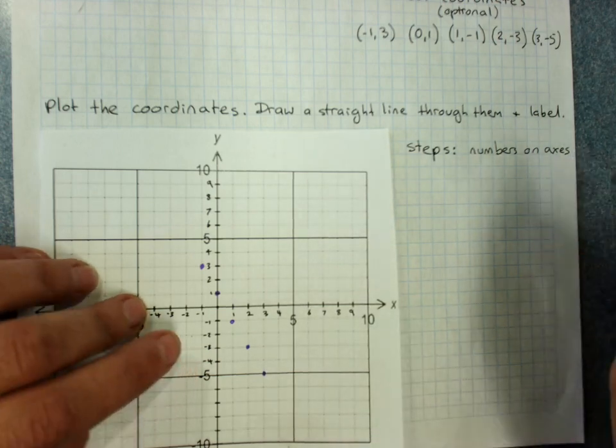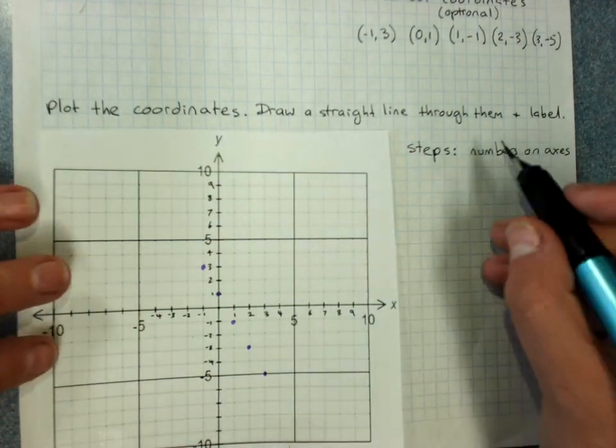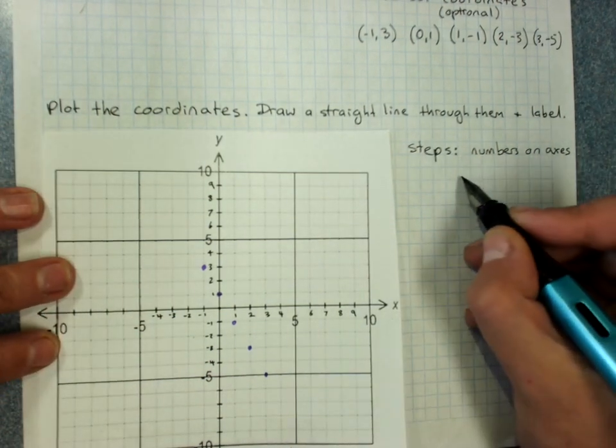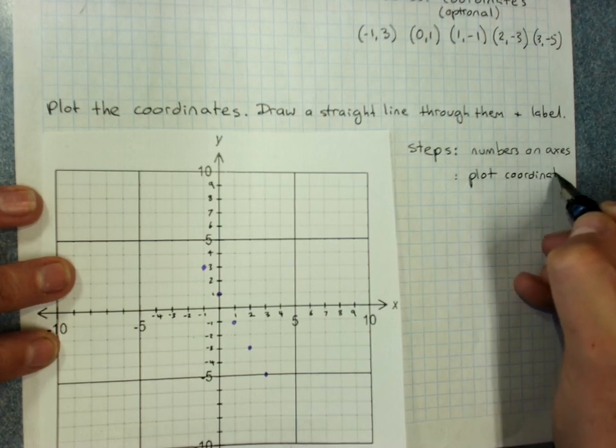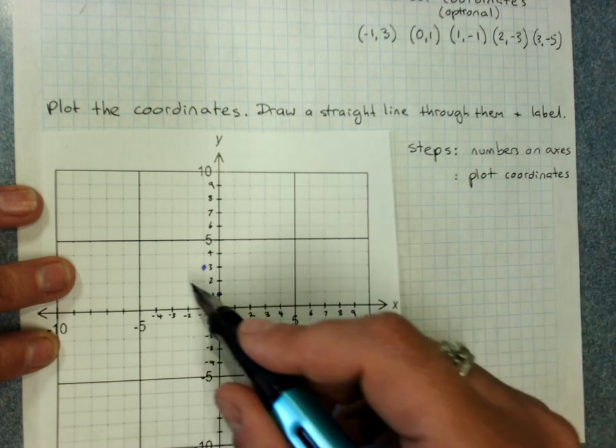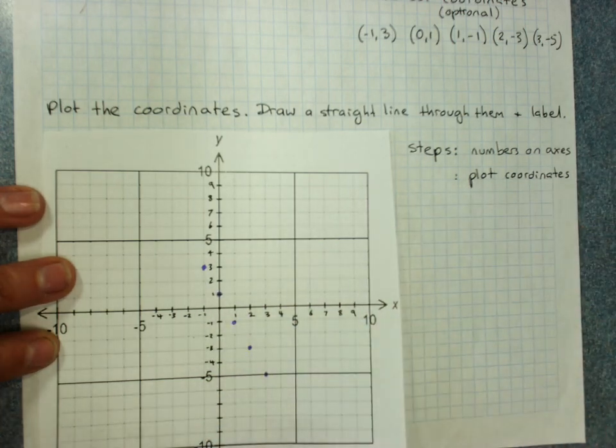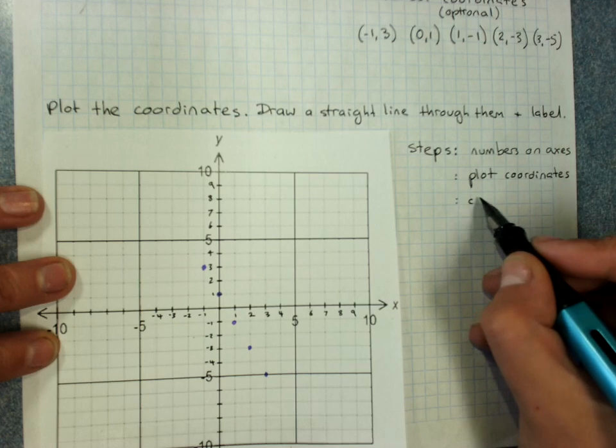Now they should always make a straight line. So numbers on the x axis. Plot coordinates. Plot means to graph them in the right spot.